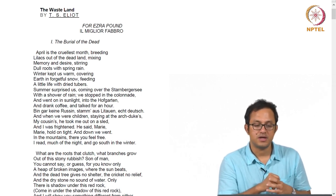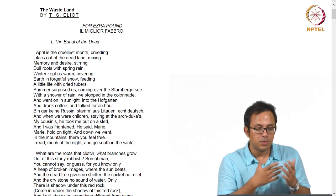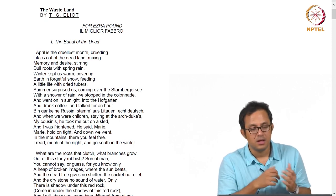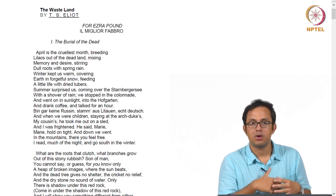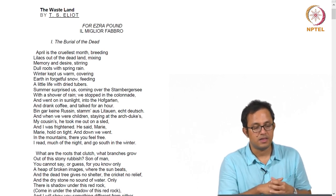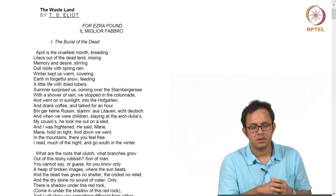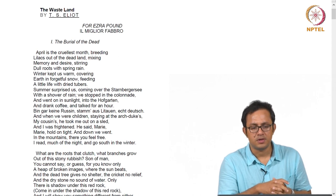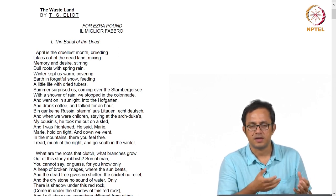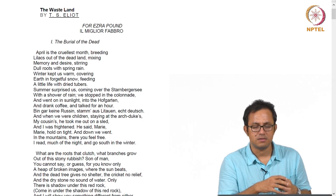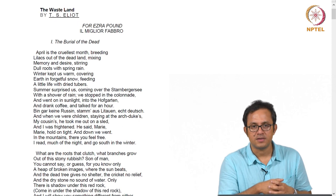He uses myths of Tiresias, he uses myths of Lazarus, he uses myths of different European origin, and he also alludes to non-European myths, religious figures, and non-European references. For instance, the whole poem ends with a reference to Shanti, Shanti, Shanti, which features in the Bhagavad Gita — something Eliot was very interested in as a reader.